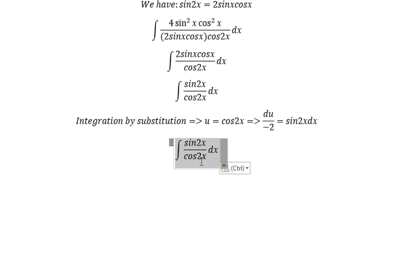Sine 2x over cos 2x. Cos 2x we change for u. dx we change for du over negative number 2.